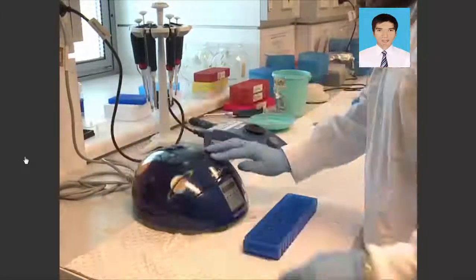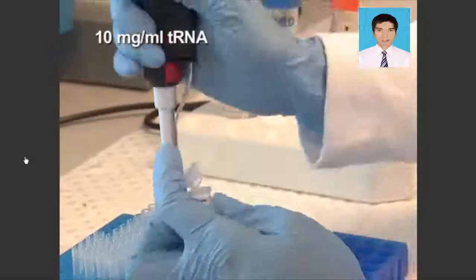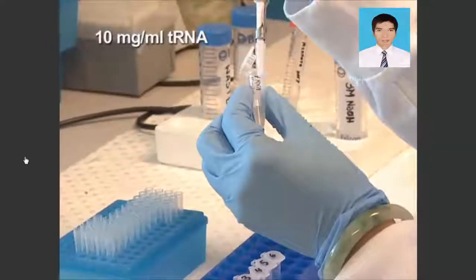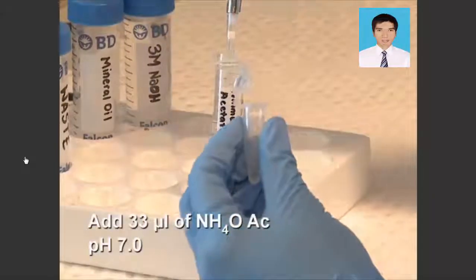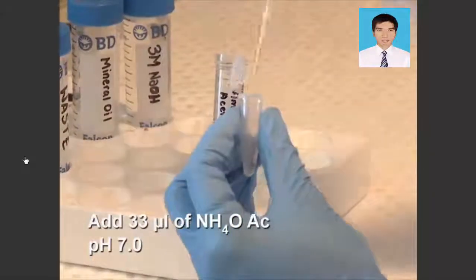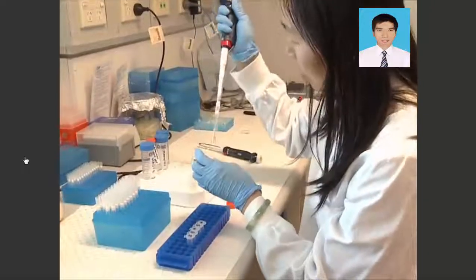Centrifuge the samples briefly and then add 1 µL of tRNA to each sample. Neutralize the solution by adding ammonium acetate to a final concentration of 3 molar.